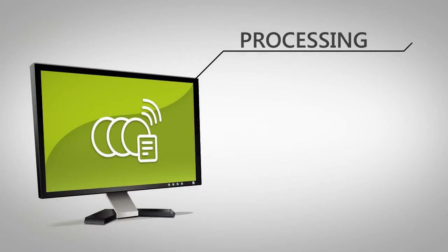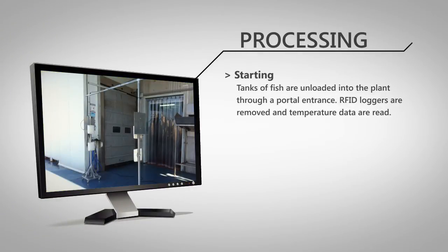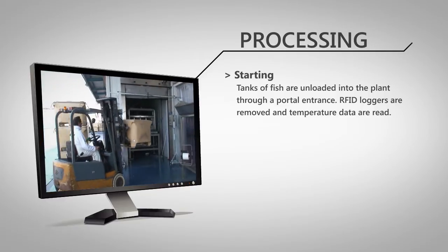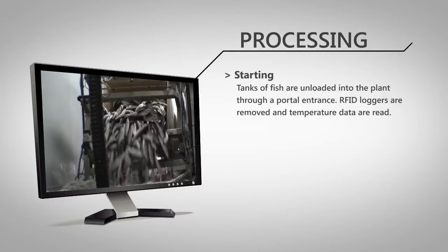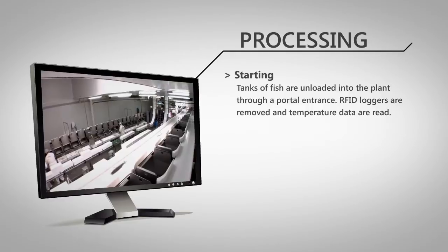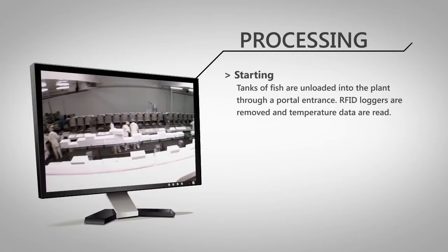The processing segment will start with the arrival of fish from the farm in sealed tanks. To perform the required collection of information, a fixed RFID portal will generate the corresponding events when a new tank of fish is entered at the plant.